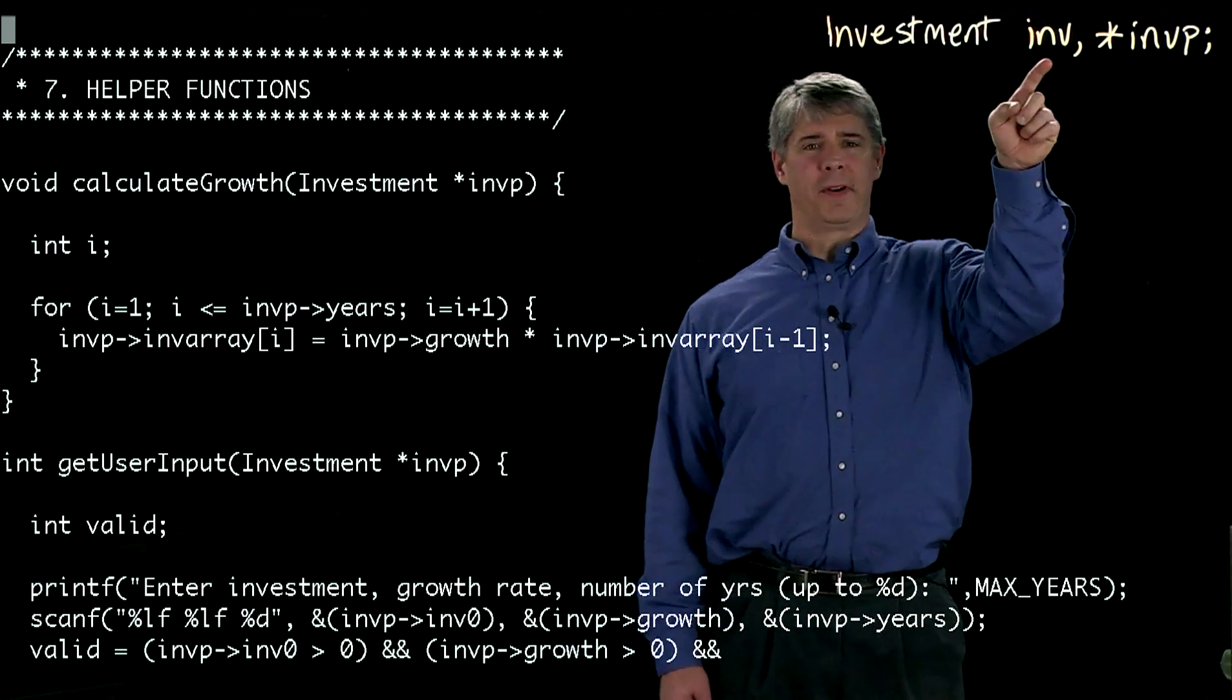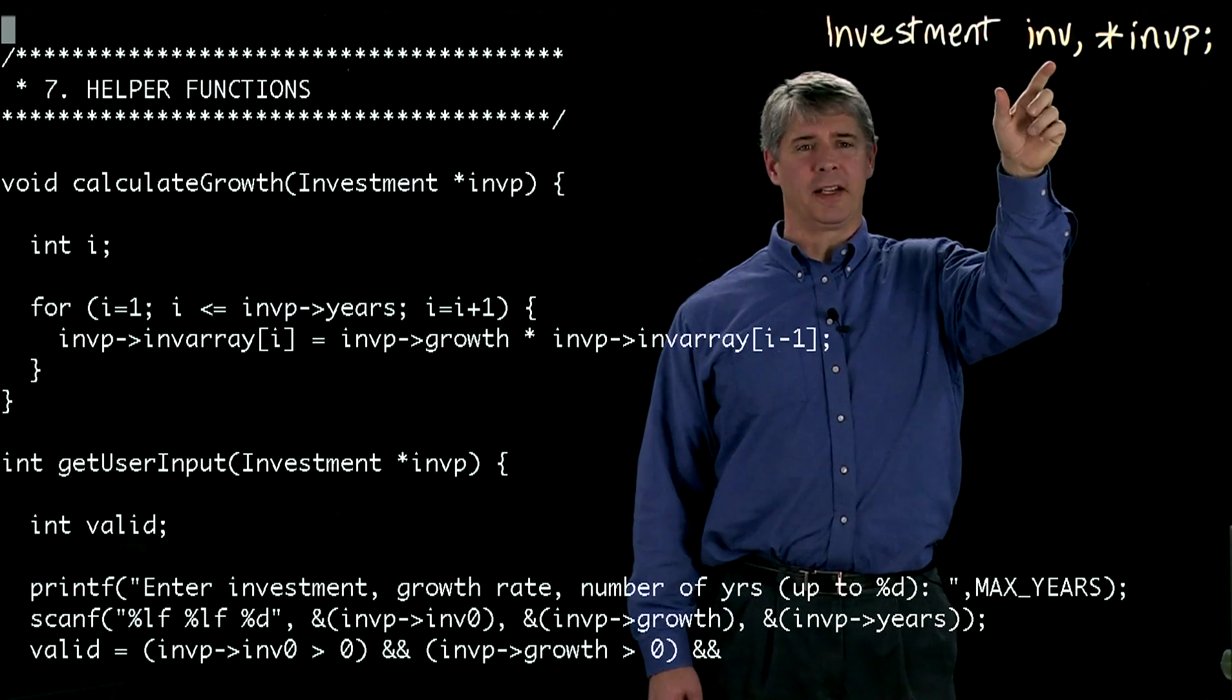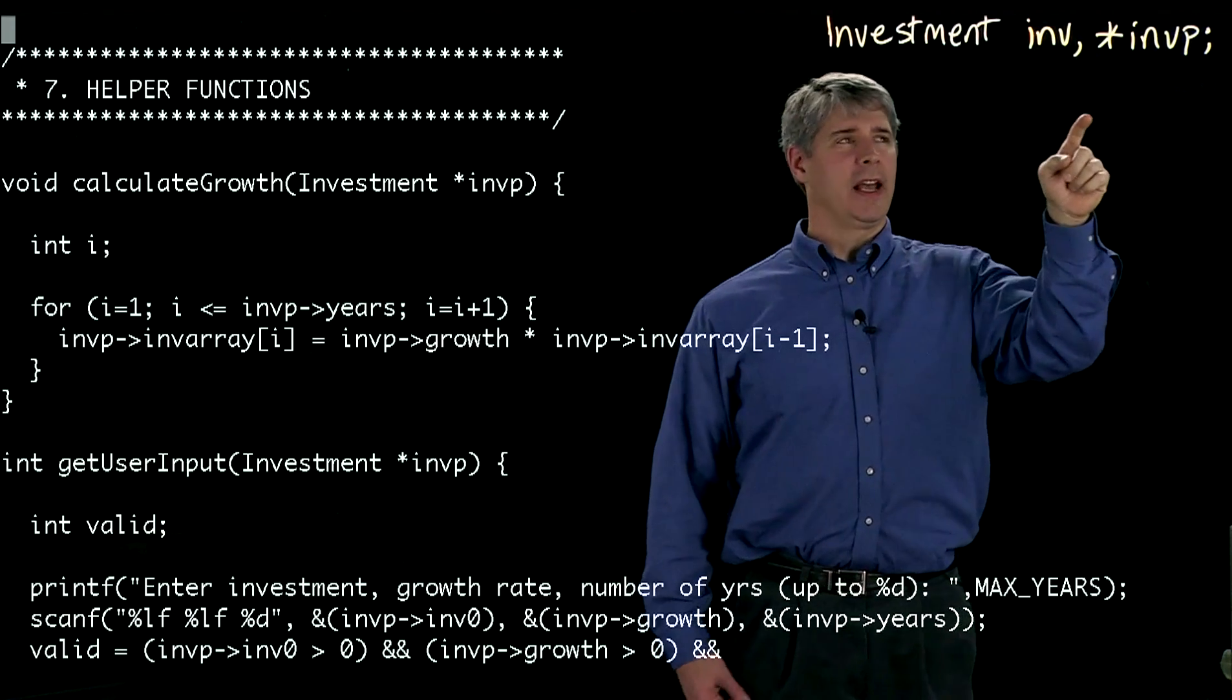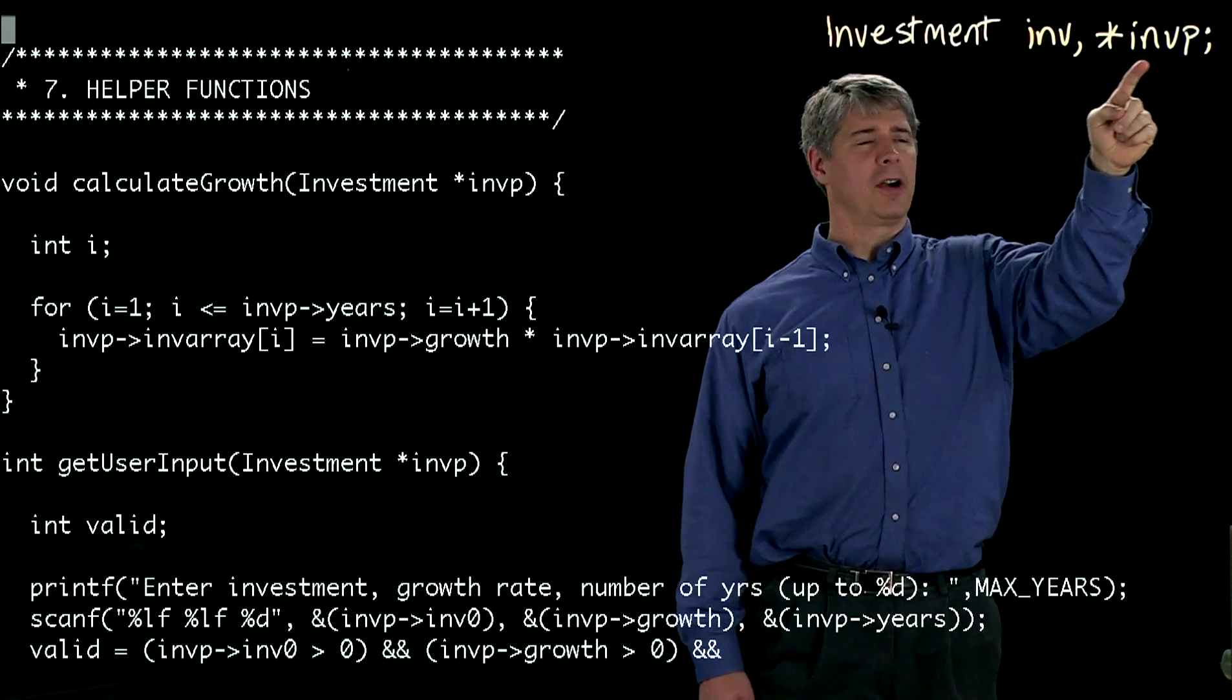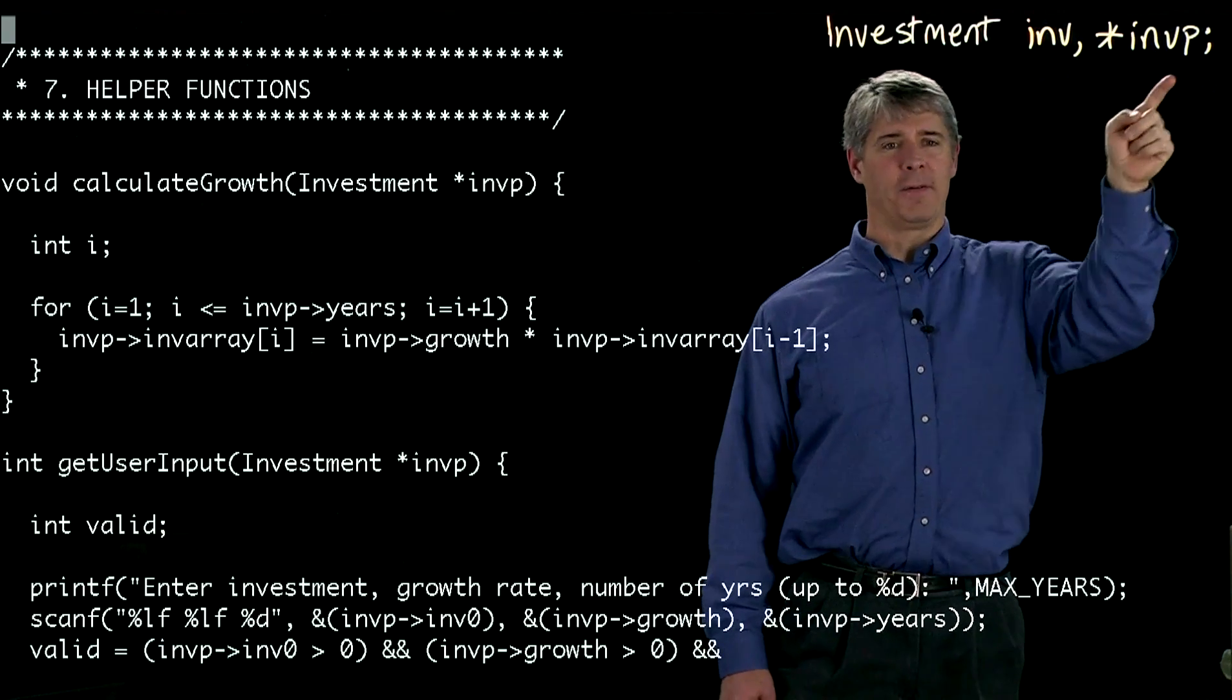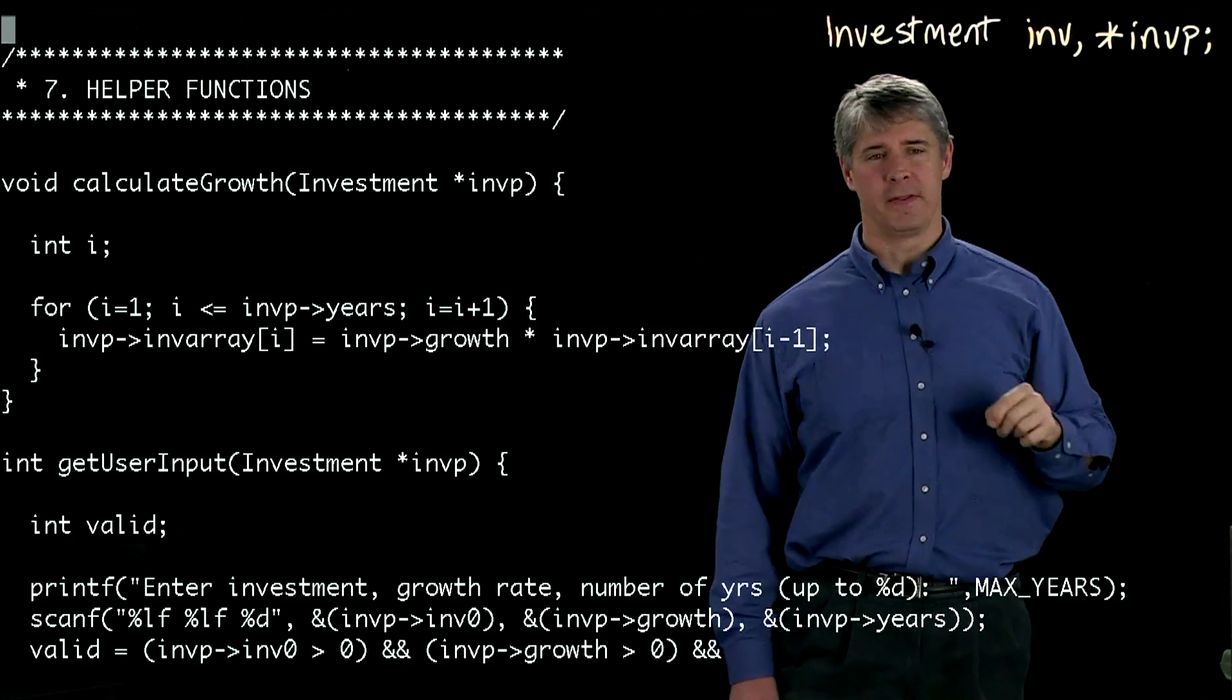So remember that we've got a variable defined earlier called investment inv, and that's of type investment. And we're also going to see variable star inv p, and that means that inv p by itself is a pointer to something of type investment.